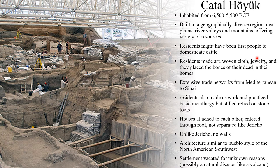Now let's discuss Chatalhuyuk. Chatalhuyuk was inhabited from roughly 6500 to 5500 BCE. Unlike Jericho, the settlement of Chatalhuyuk was eventually abandoned. Chatalhuyuk was built in a geographically diverse region near plains, river valleys, and mountains, all of which would have offered a variety of resources to its residents. Some scholars think the residents of Chatalhuyuk may have been the first people to domesticate cattle. The people of Chatalhuyuk had resource surpluses, giving them a chance to make art, woven cloth, and jewelry. Like the residents of Jericho, they also placed the bones of the dead in their homes, possibly for the same reasons of ancestor worship and signifying their ownership of the land.